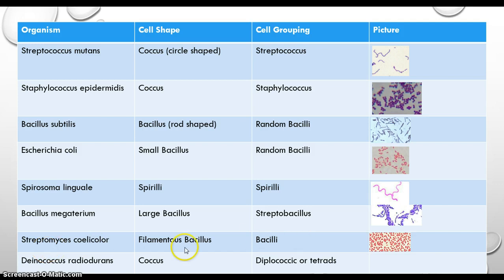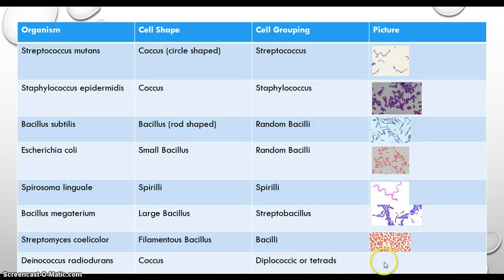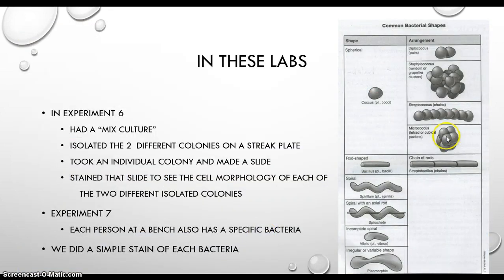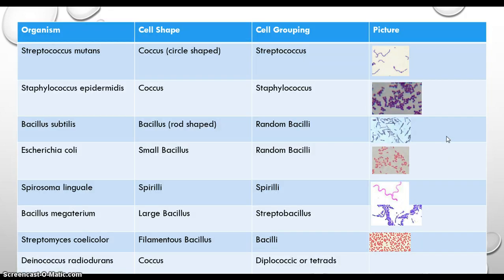Streptomyces coelicolor is kind of misleading because it says 'Strepto,' but those are just bacilli with some filaments if you look at them closely. The last one is Deinococcus radiodurans, which should sound familiar from the UV experiment. Deinococcus forms diplococci or tetrads, similar to the micrococcus grouping. And that's it for those experiments — we're just looking at the cellular morphology and the smear preparations from the aseptic technique.